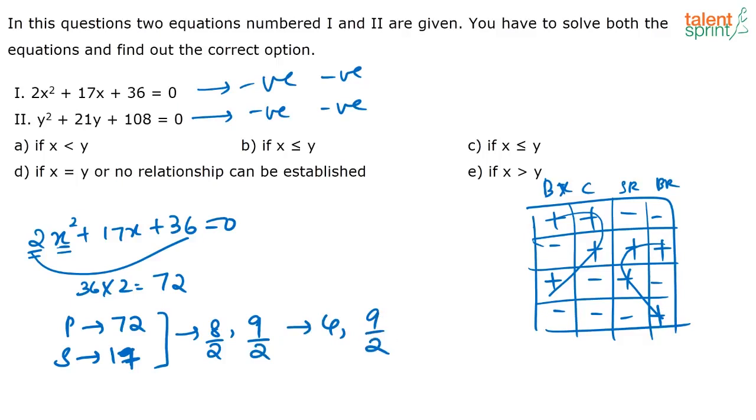Now using the sign method, we know that both roots of this equation are going to be negative. So put a minus sign in front: -4 and -9/2. Those are going to be the roots of this quadratic equation.